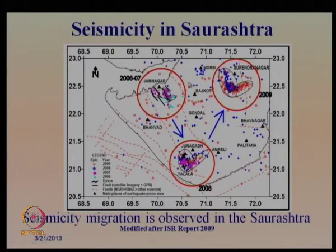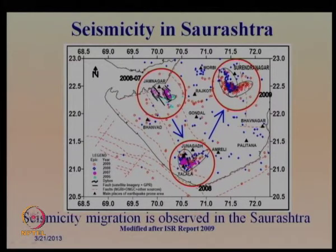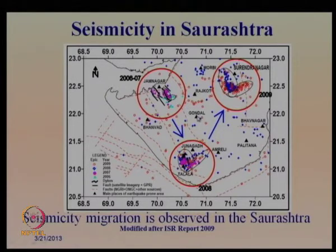Within the Saurashtra region, seismicity also migrates over time. Based on ISR data, clustering of earthquake activity shifted from Jamnagar to Junagadh to Surendranagar between 2006 and 2009. This migration of seismicity must be considered when conducting region-specific seismicity analysis.